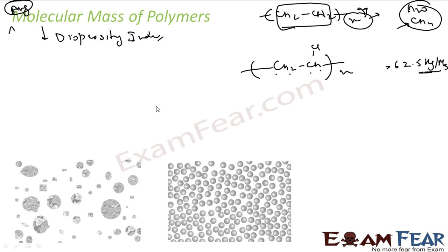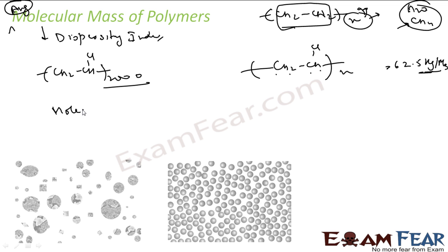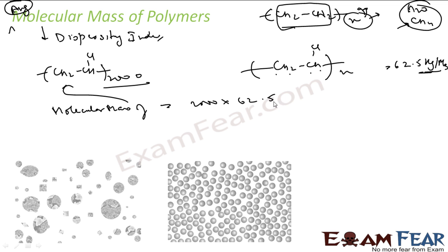But if you want to find the total molecular mass of a specific PVC sample, it is not fixed in general. However, if you know that the PVC you have contains 2,000 molecules of vinyl chloride, then you can say the molecular mass of this particular compound is 2,000 × 62.5, giving you the total molecular mass.